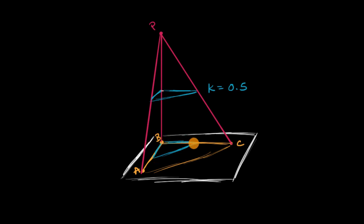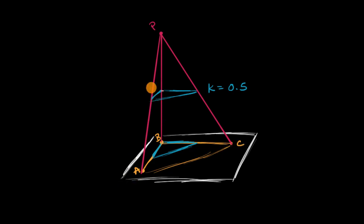And you can see it right over here. This length right over here — what BC was dilated down to — is half the length of the original BC. This is half the length of the original AB. And this is half the length of the original AC. But you could do it at other heights along this pyramid.